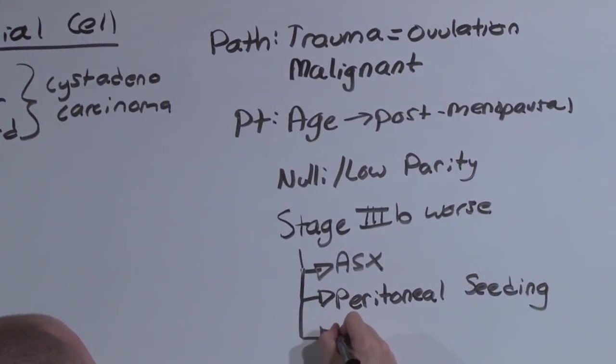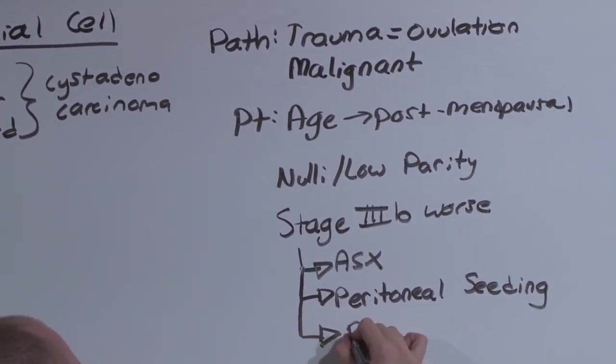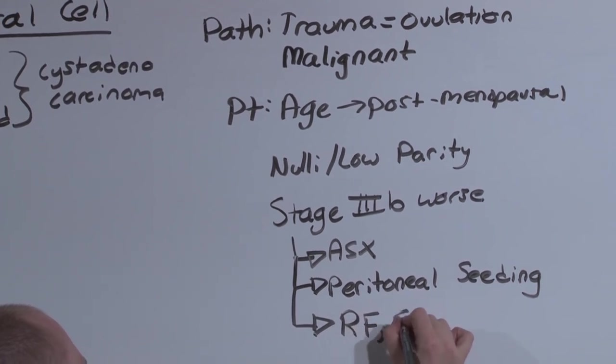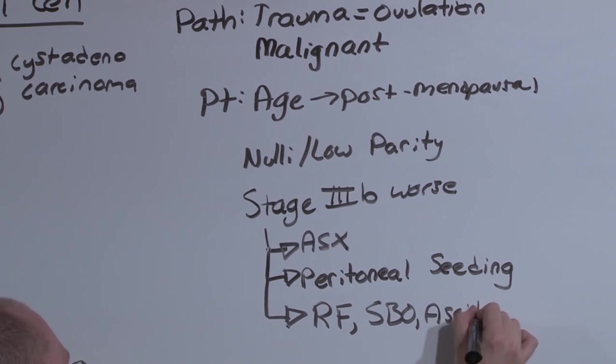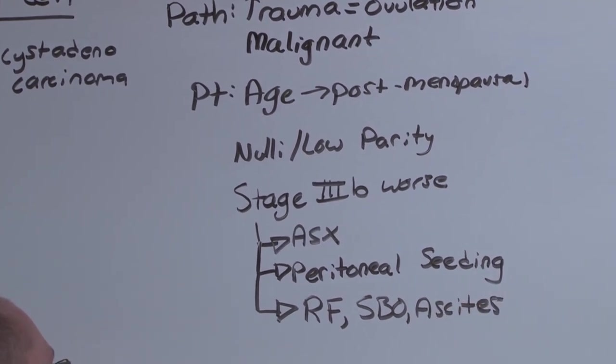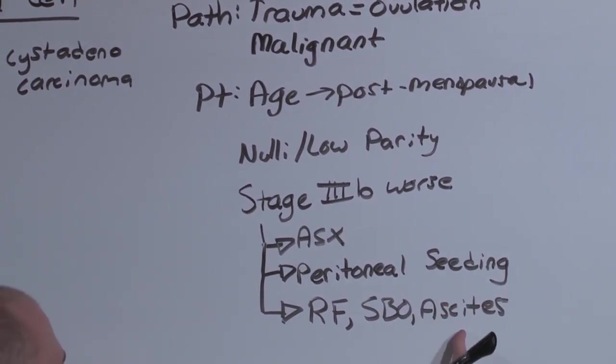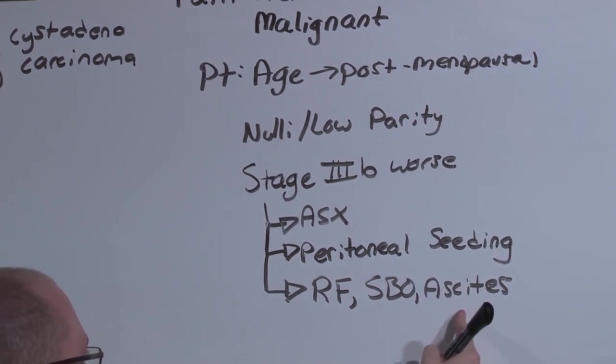In advanced stages, you might have renal failure, small bowel obstructions, or ascites. In fact, if you see a question about a post-menopausal female with ascites and it is not due to liver disease, think epithelial cell ovarian cancer.